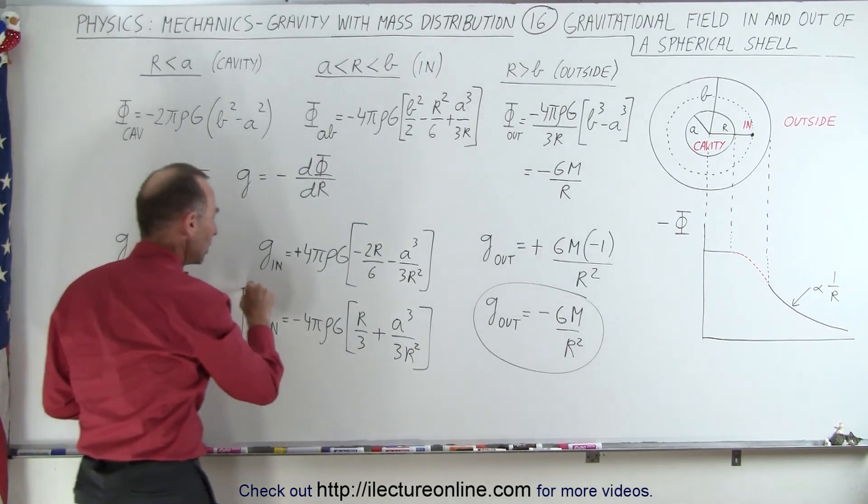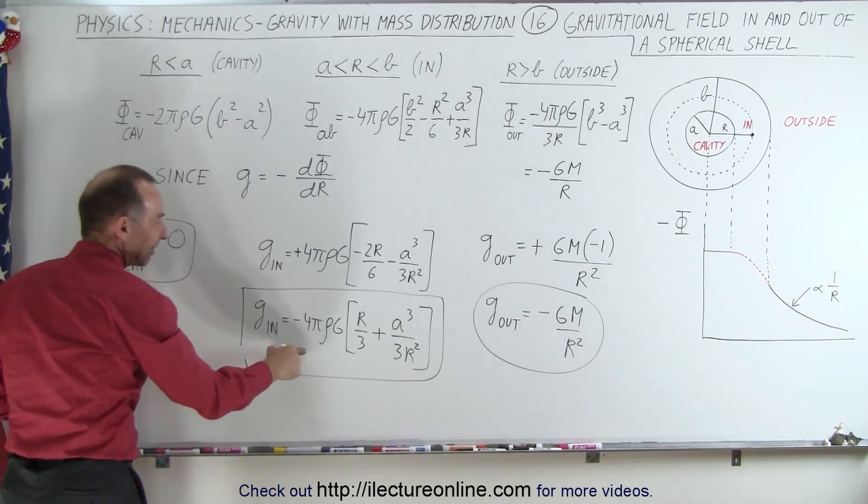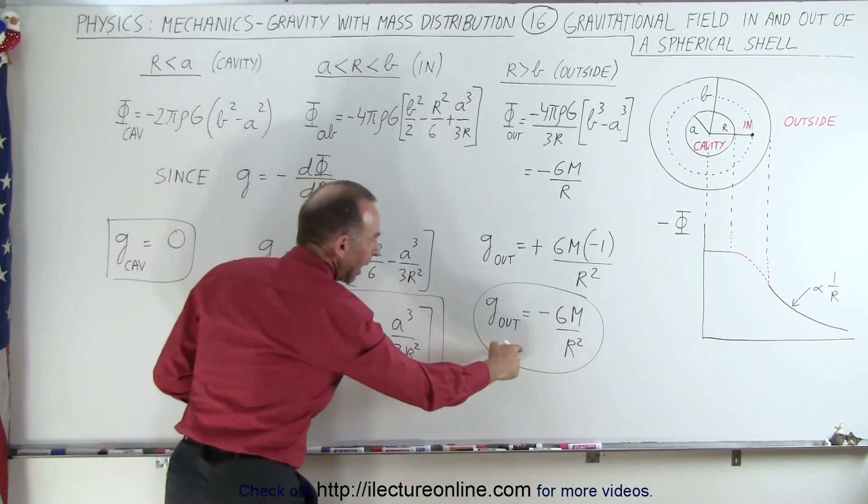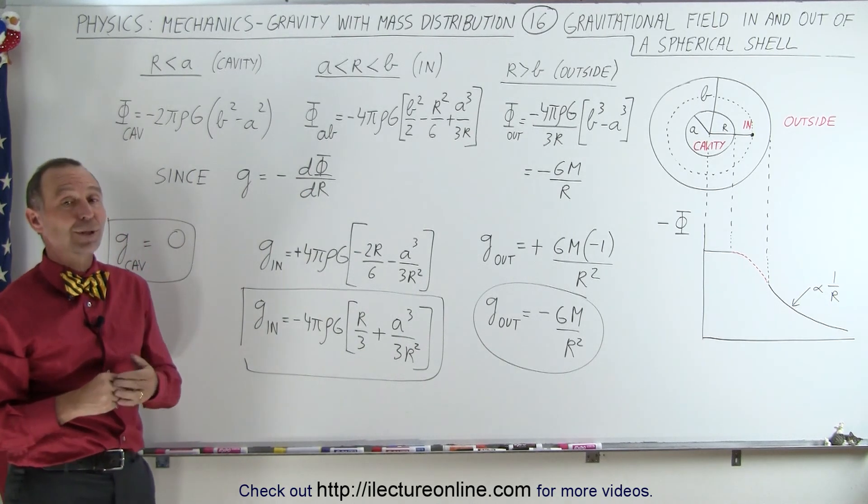And so those are the three gravitational fields inside the cavity, inside the region of the sphere, and outside the sphere of that particular arrangement. So that's how we do that.